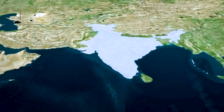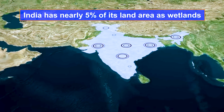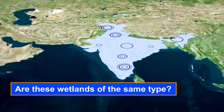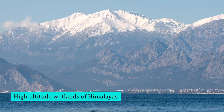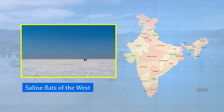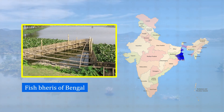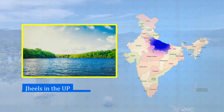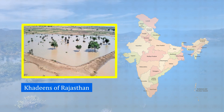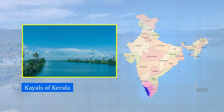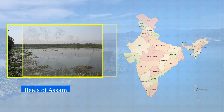India has nearly 5% of its land area as wetlands. There are many kinds of wetlands in India known by many different names — from the high altitude wetlands of the Himalayas to the saline flats of the west, from the spongy spangs in Ladakh to the fish berries of Bengal, from jils in Uttar Pradesh to the kulams of Tamil Nadu, from khadins of Rajasthan to khayals of Kerala, from chors of Bihar to the beals of Assam.